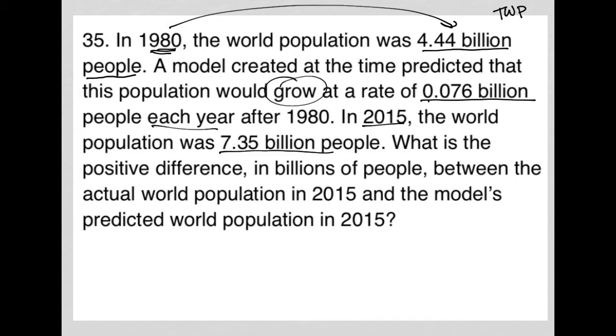If this 0.076 billion is all about what happens after 1980, then I'm going to say that the P population is equal to 1980's population, 4.44, so all these numbers will be in billions, plus the 0.076, and because that's per year, I'm going to multiply that by T, where T is years.